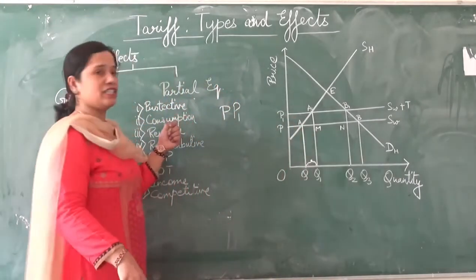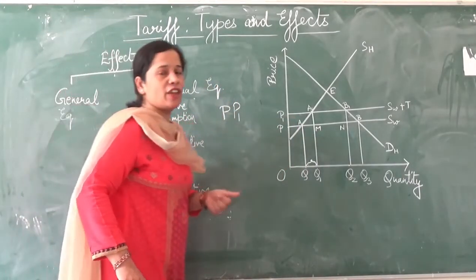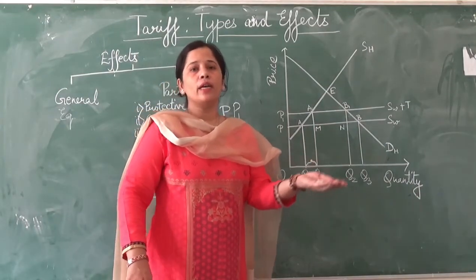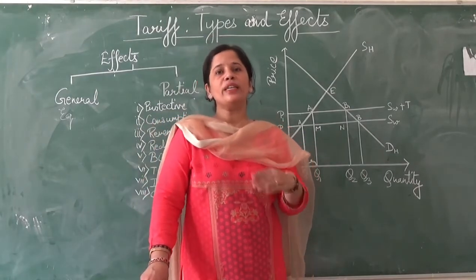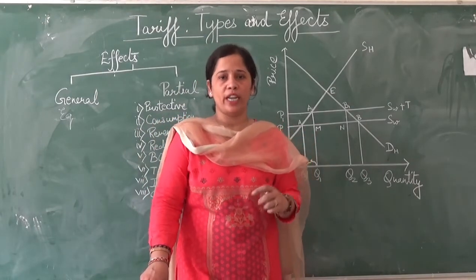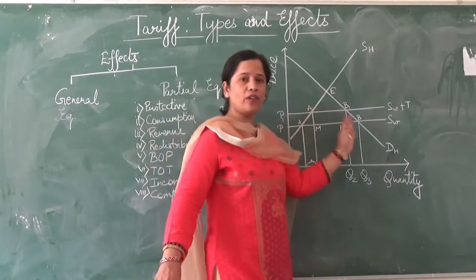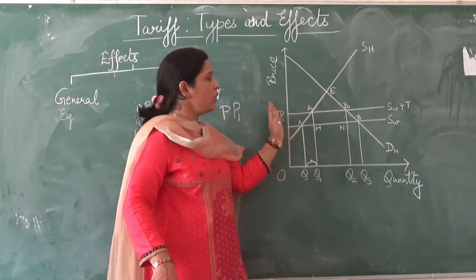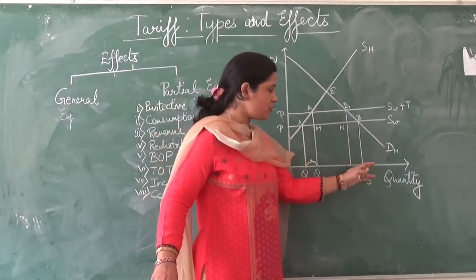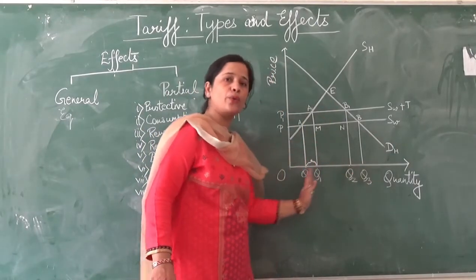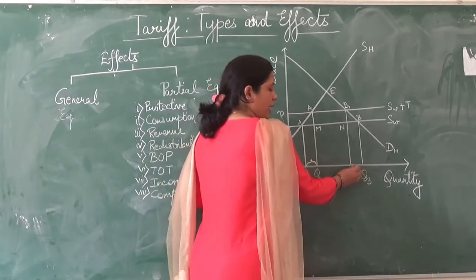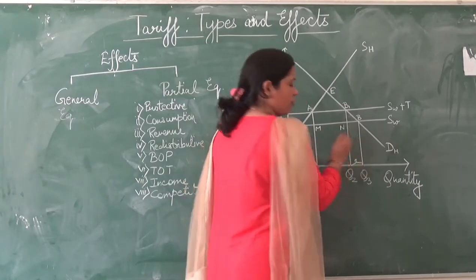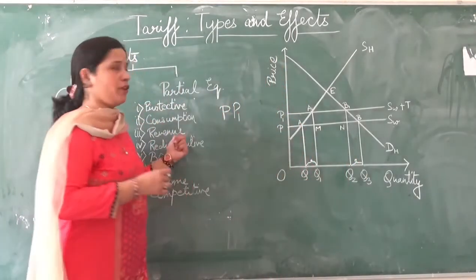The second is the consumption effect. When the price of a commodity increases with the imposition of a tariff, the consumption of the commodity decreases. Here we see that as price increases, demand decreases from OQ3 to OQ2. This decrease in demand, Q2Q3, is known as the consumption effect of a tariff.